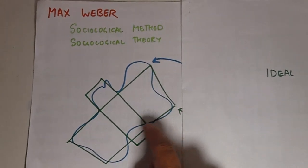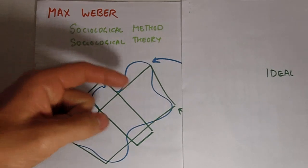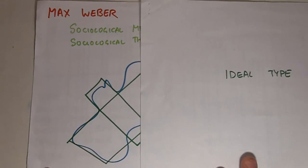If I imagine this blue blob as reality and this green framework as our scientific understanding of reality, it immediately strikes us that they don't match up perfectly. Our understanding of the real world doesn't match perfectly the real world as it really is. Max Weber says that in order to overcome this difference between understanding and reality, we begin by developing ideal types.